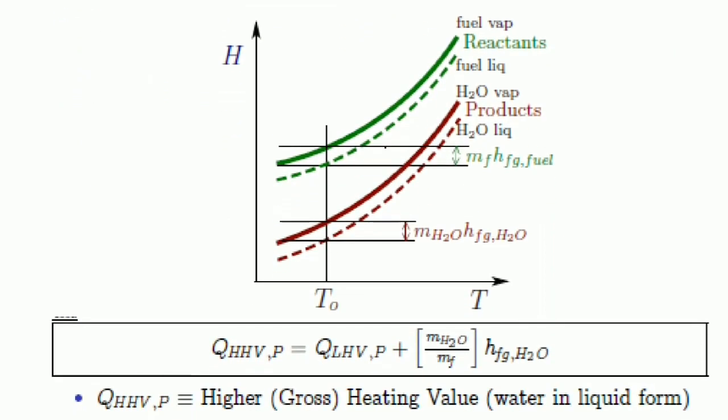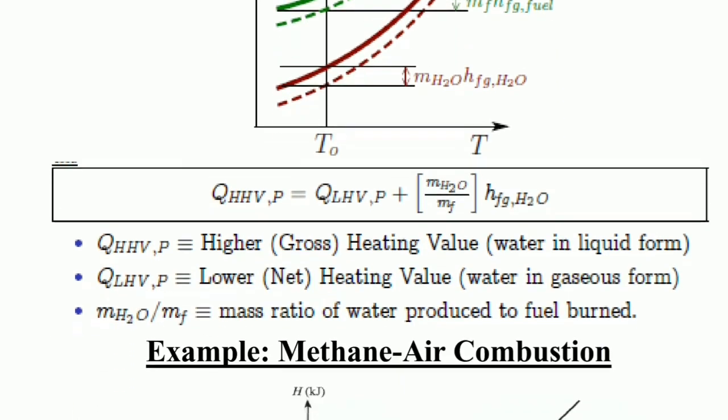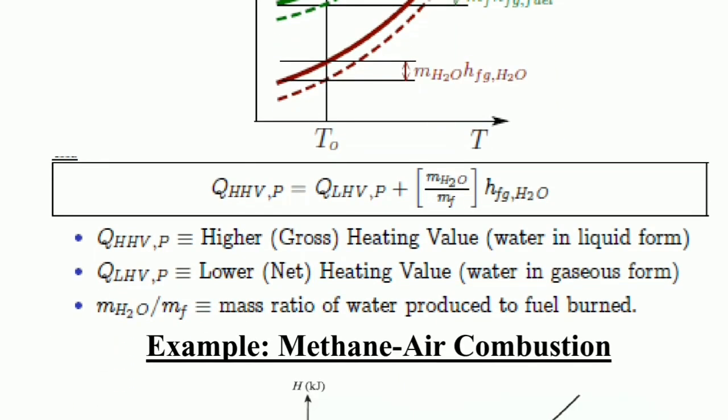Another graph shows T₀ and T on the x-axis and H on the y-axis. You can see two green lines for reactants and two red lines for products. Higher or gross heating value refers to water in liquid form, while lower or net heating value refers to water in gaseous form.